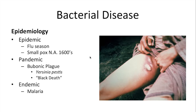A pandemic is when an epidemic is worldwide and very widespread. Historically, one of the best examples of that is the bubonic plague, which is sometimes termed the Black Death. It's caused by a bacteria, Yersinia pestis. The picture on the right shows the swollen, large lymph nodes that were called buboes, and that's how it got its name — bubonic plague.